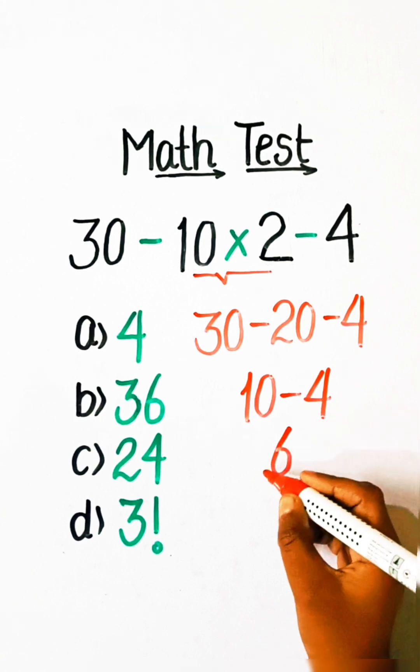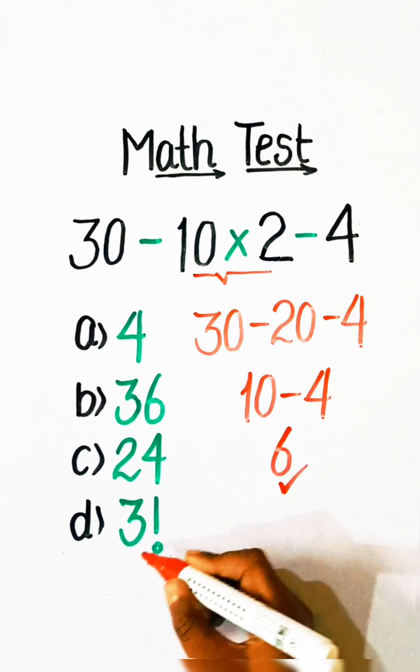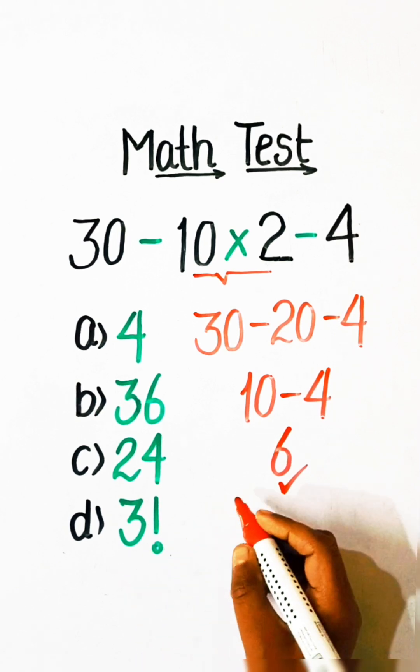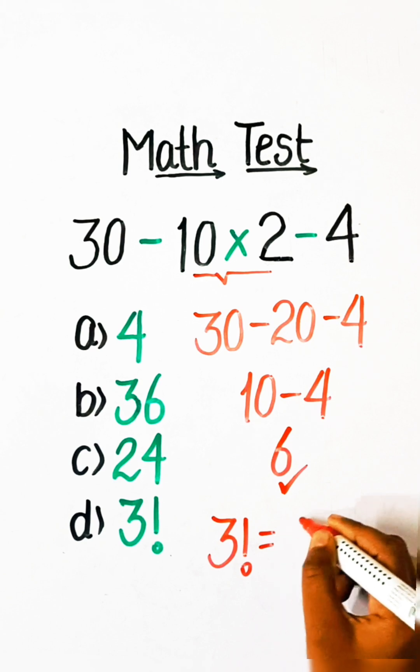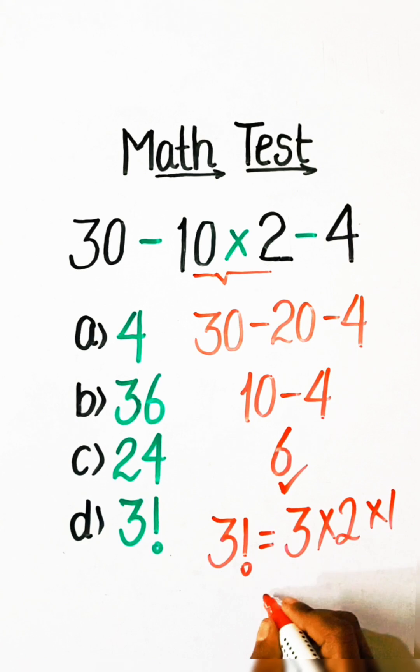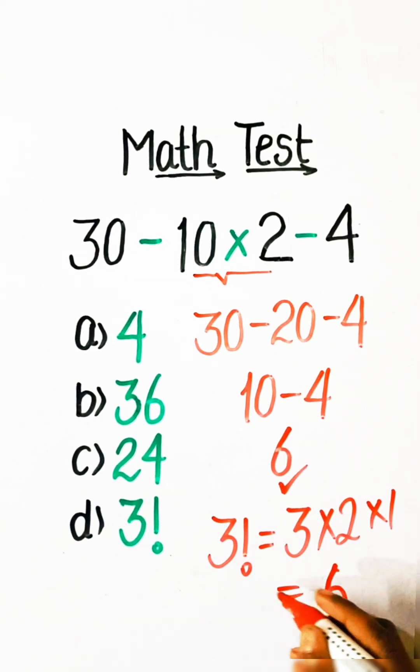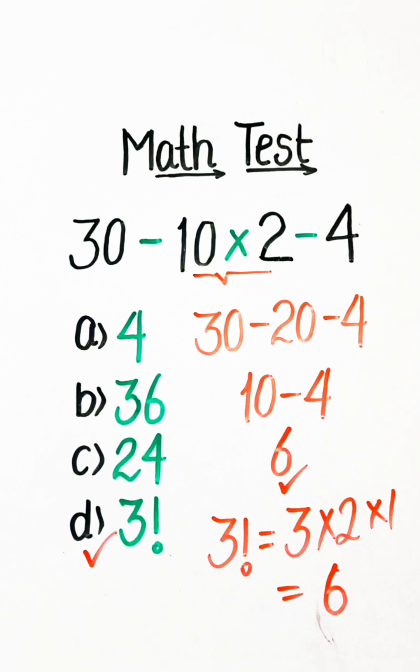So 6 will be our correct answer. The value of 3 factorial is 3 multiplied by 2 multiplied by 1, which equals 6. So option D, 3 factorial, will be our correct answer.